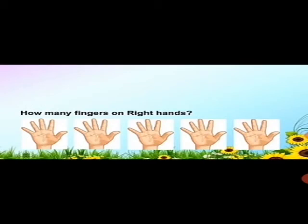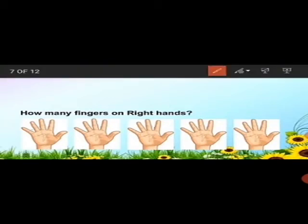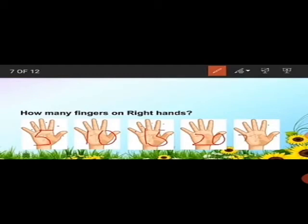How many fingers are on the right hands? You can see here 5 hands and we have to count the fingers. So you count: 1, 2, 3, 4, 5 — getting one more hand gives 10, then 15, then 20, then 25. You can also use your own hands while doing skip counting by 5s.